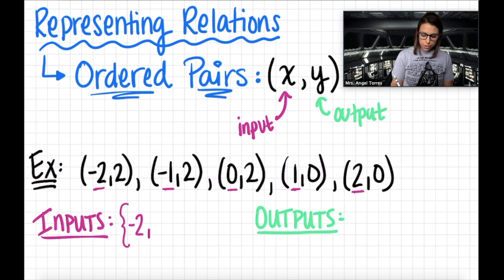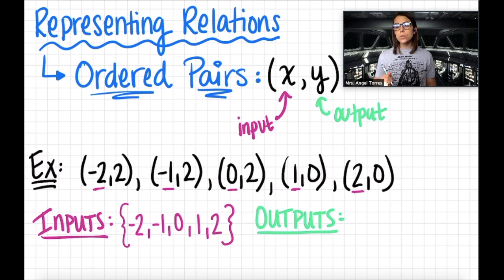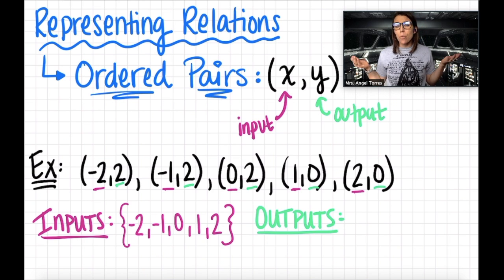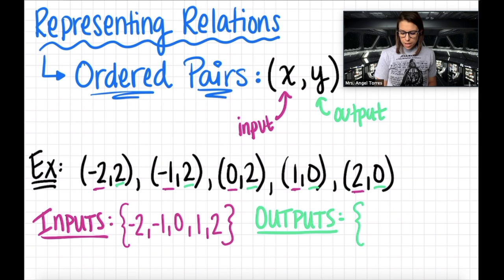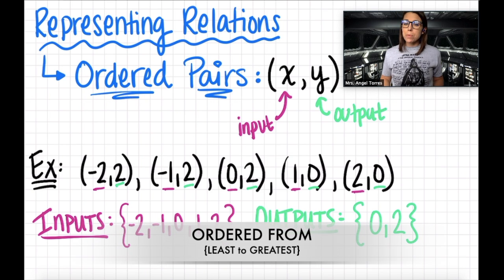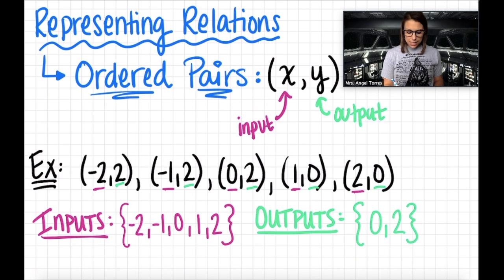So my inputs were negative 2, negative 1, 0, 1, and 2. My outputs were 2, another 2, another 2, 0, and 0 again. It seems silly to list 2 three times and 0 twice — we're just saying what was represented in our output. So in this case there were only two numbers represented as our output: 0 and 2. Also note that I ordered my inputs and outputs from least to greatest — starting with the least input and ending with the greatest, and same for outputs.